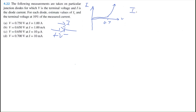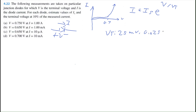This behavior comes from the very common diode equation: the diode current equals the source current IS times e to the power of the voltage across the diode divided by the thermal voltage Vt, where Vt equals 25 millivolts or 0.025 volts. This is a semiconductor property, and IS is the source current.